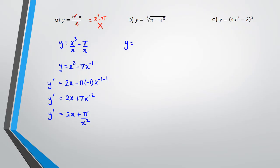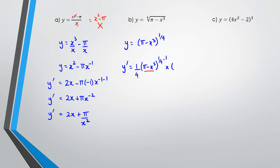For question (b), you've got to get rid of the cube root symbol, so we write this as (pi minus x cubed) to the power of a quarter. Differentiating it, we get one quarter times (pi minus x cubed) to the power of a quarter minus one, multiplied by the differentiation of whatever's inside the bracket, which in this case is negative three x squared. So y dash equals negative three x squared times (pi minus x cubed) to the power of negative three quarters, all divided by four.